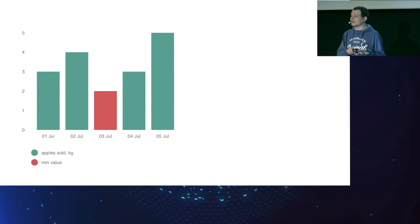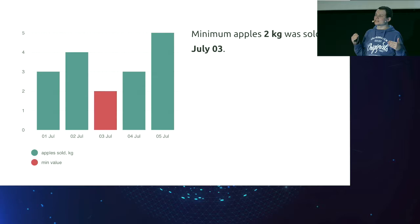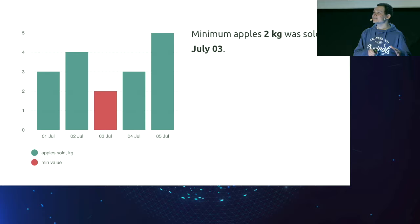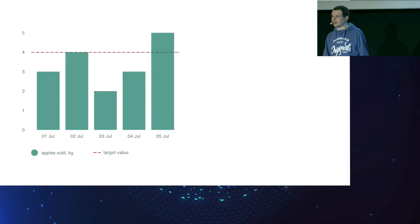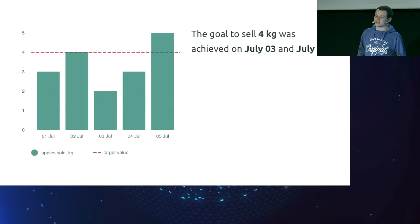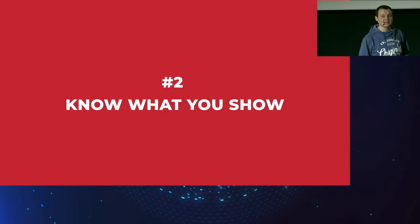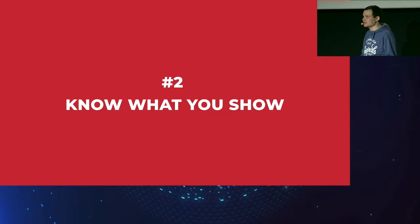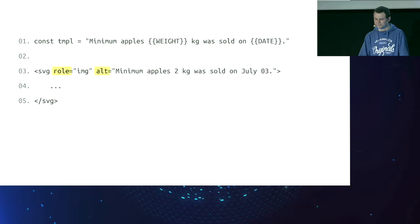Now take a look at this chart. Even if it contains exactly the same dates and values, it can tell the user totally different information. This chart might say there was a less successful day — July 3rd, where we sold just 2 kilograms of apples. Please make sure this description is not static — it contains dynamic data from the server. Another chart with the same dates and values but different framing might tell us there was a goal to sell 4 kilograms a day, and we achieved that on July 2nd and 5th.